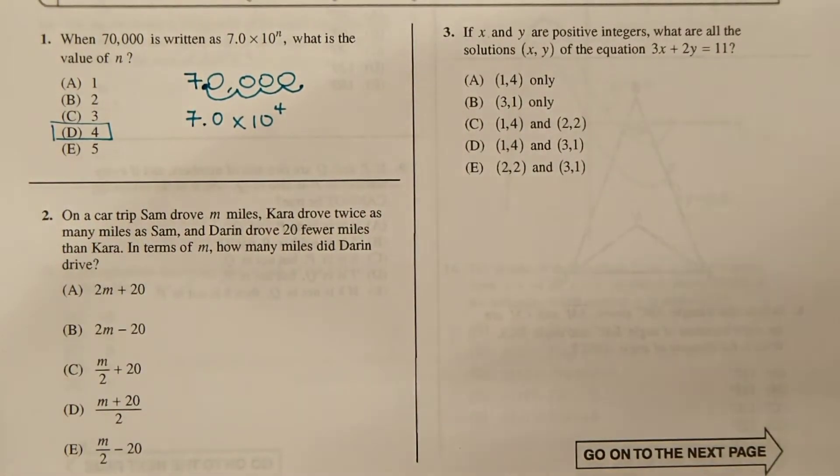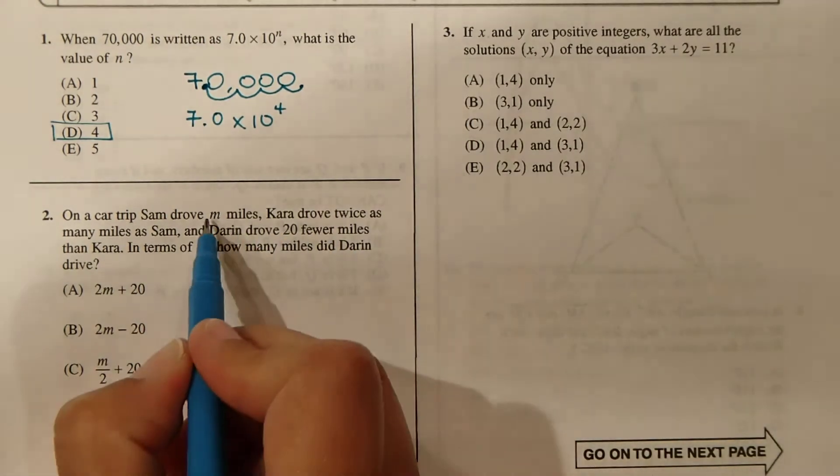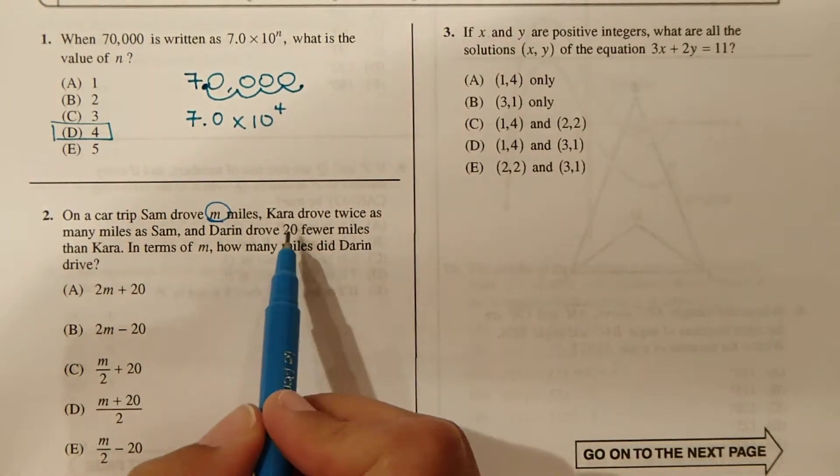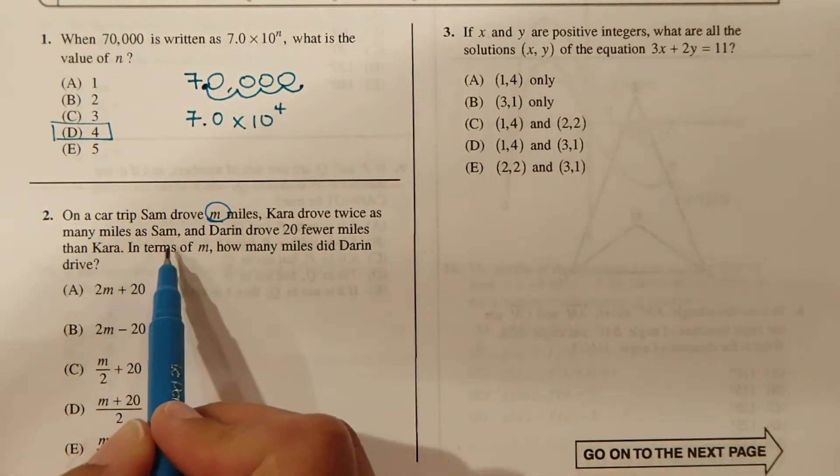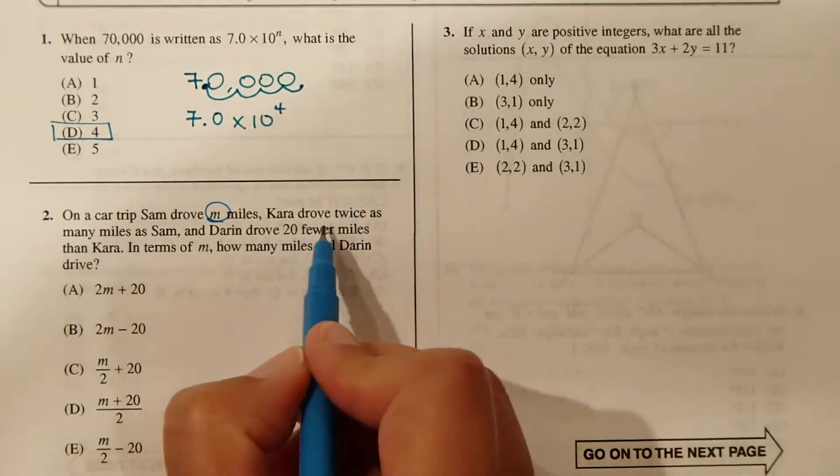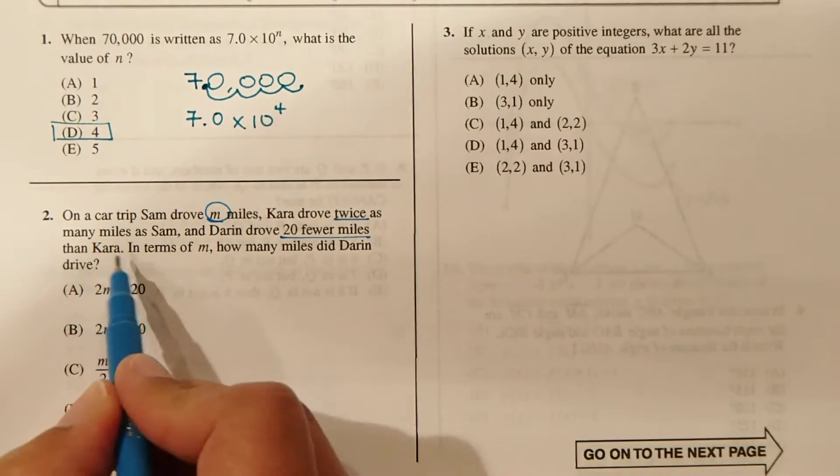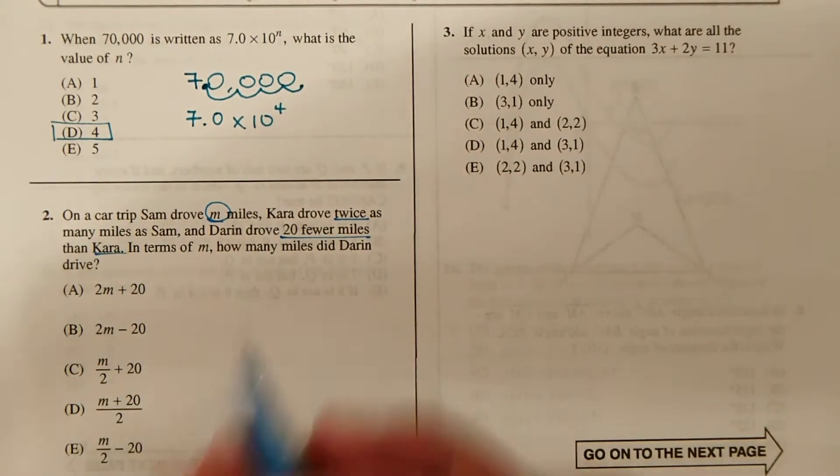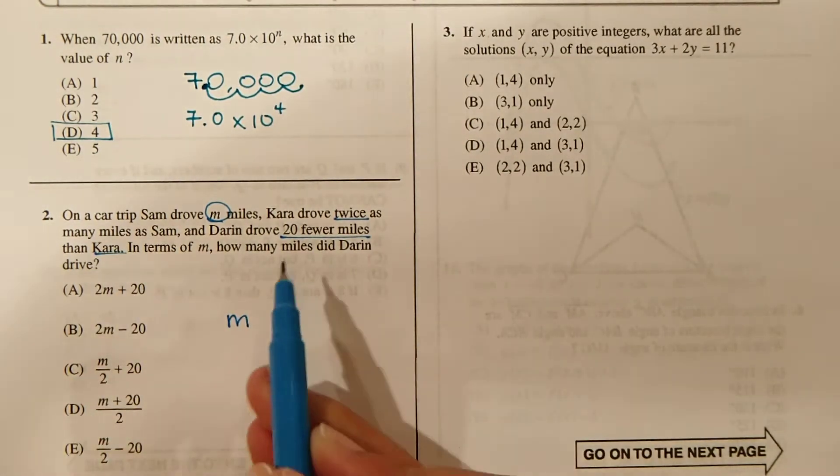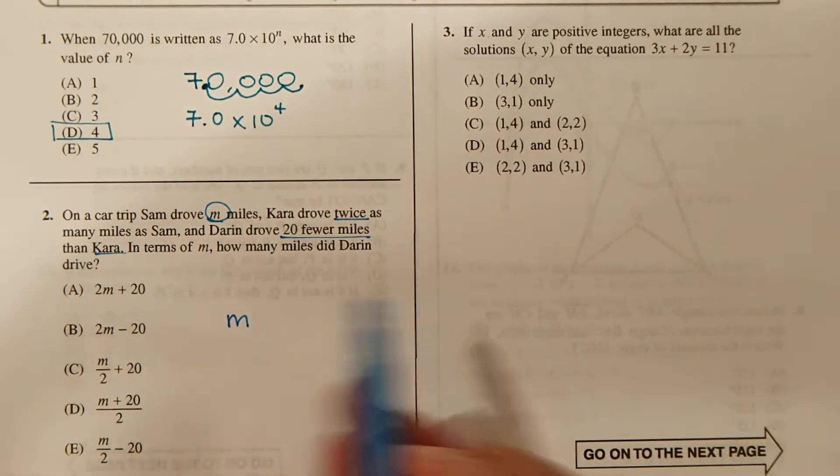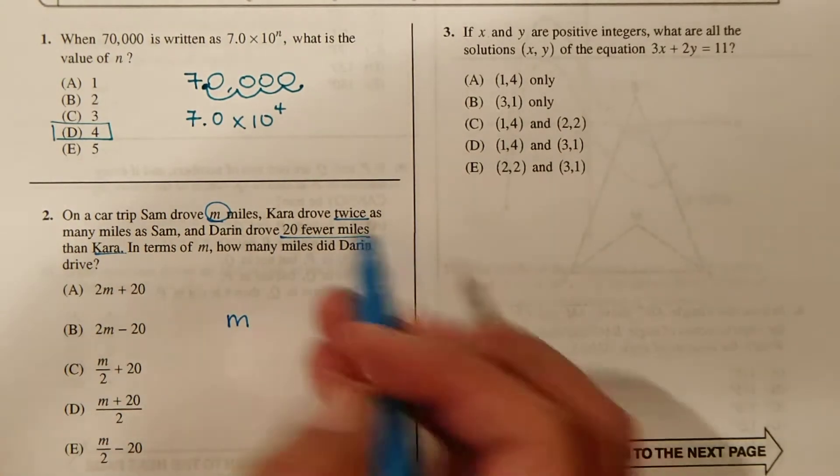Number 2. On a car trip, Sam drove M miles. Kara drove twice as many miles as Sam. Okay, twice as many. And Darren drove 20 fewer miles than Kara. Okay, so Sam drove M. Kara drove twice as many miles as Sam, so twice M.